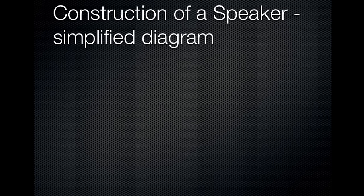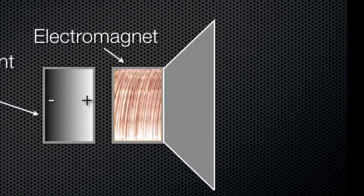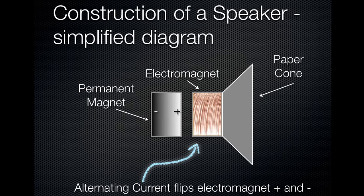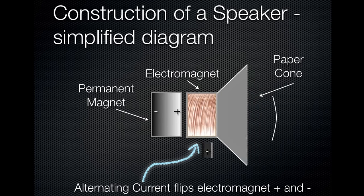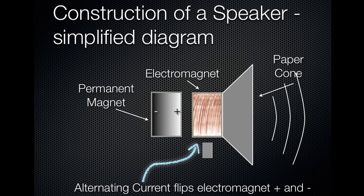We can use this to make a speaker. Here's a simplified diagram of how a speaker is constructed. First, we have a permanent magnet — and for convenience, instead of labeling the poles north and south, I've labeled them minus and plus to correspond with the electricity. Then we have an electromagnet connected to a paper cone. We send alternating current through the electromagnet, which flips the side facing the permanent magnet between plus and minus. As the analog wave dips above and below zero to plus and minus, the speaker pushes out and pulls back to create an acoustic wave of low and high pressure in roughly the same shape.